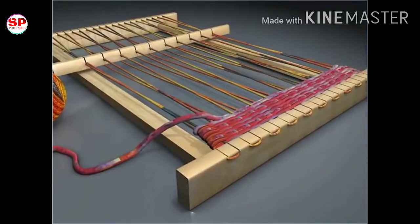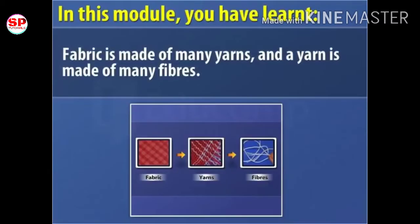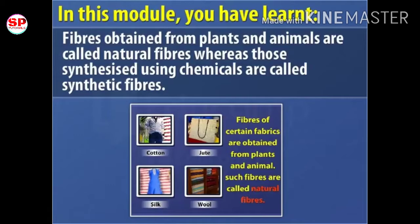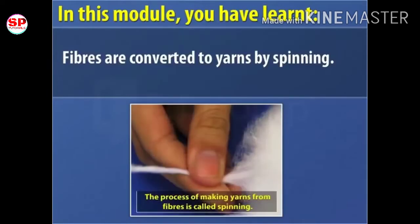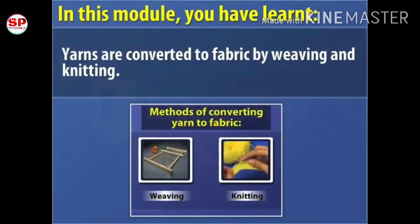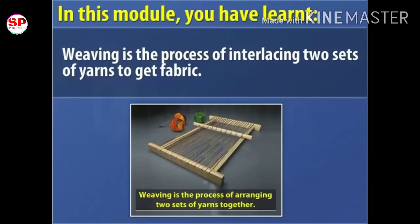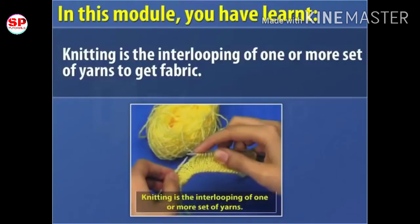Let us now learn about knitting. In this module you have learned that fabric is made of many yarns and a yarn is made of many fibers. Fibers obtained from plants and animals are called natural fibers, whereas those synthesized using chemicals are called synthetic fibers. Fibers are converted to yarns by spinning, and yarns are converted to fabric by weaving and knitting. Weaving is the process of interlacing two sets of yarns. Knitting is the interlooping of one or more sets of yarns to get fabric.